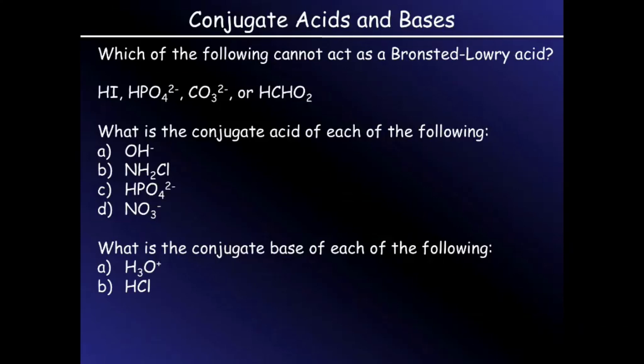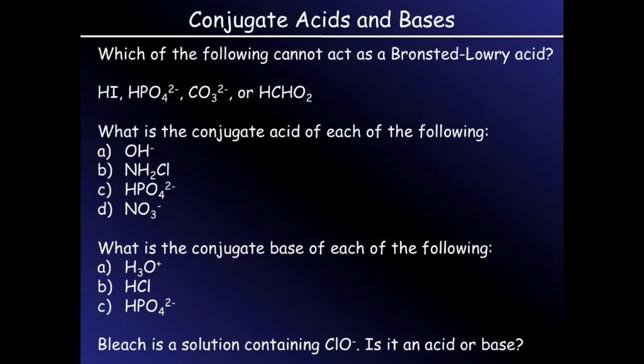HCl, if it loses a hydrogen ion, becomes Cl minus. HPO4 2 minus would become PO4 3 minus.